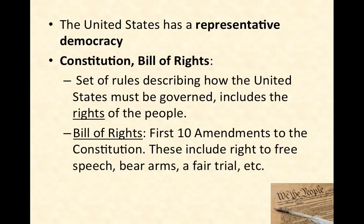An important part of the American political system is the Constitution and Bill of Rights. The Constitution is literally a piece of paper and it has a set of rules describing how the United States should be governed, how it should be controlled, and how power should be maintained. In addition to how the country should govern, it also includes rights for the citizens of the country. These rights are called the Bill of Rights and these are the first ten amendments — or additions or changes — to the Constitution.